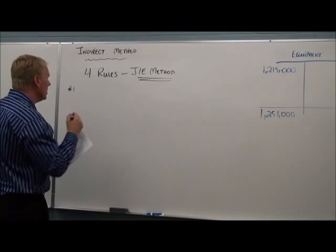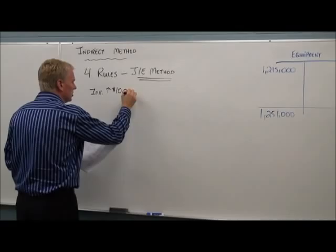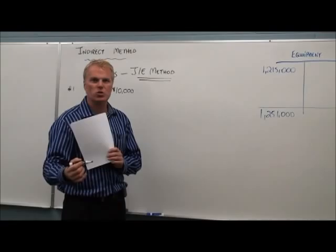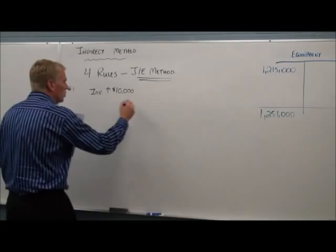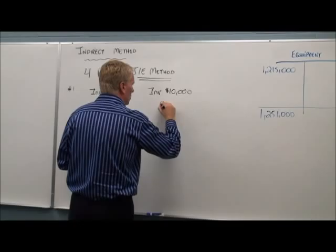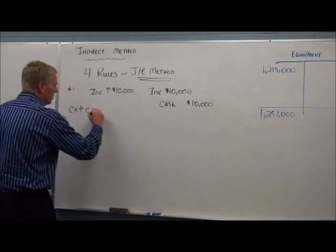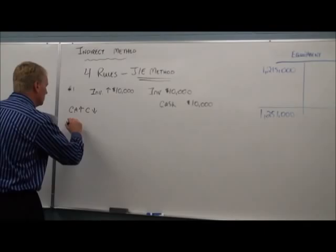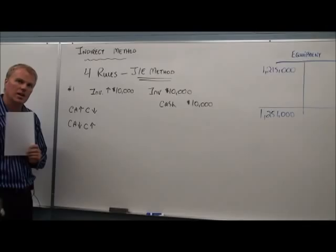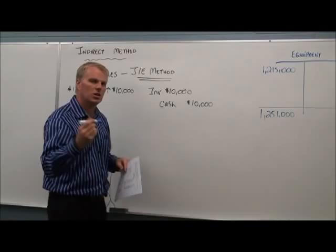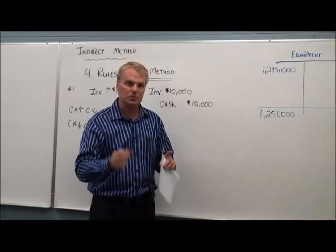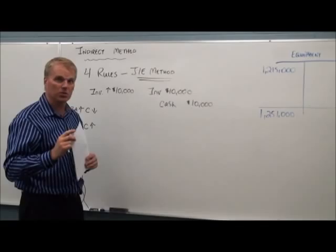When we look at changes in cash, assume that the other part of the entry is cash. So if it's a debit cash, cash is going up. If it's a credit cash, cash is going down. So let's solve the four rules for the indirect method. Rule number one. For example, if our inventory went up $10,000, we would do debit inventory $10,000, credit cash $10,000. So rule number one is that current assets going up, cash going down, and it works basically the opposite way as well. If current assets are going down, cash is going up.